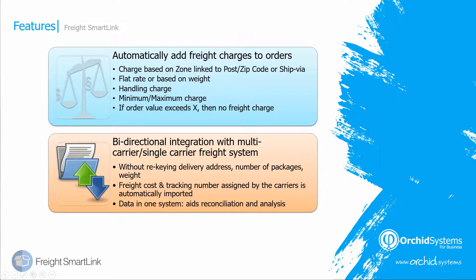The second feature of FreightSmartLink is the bi-directional integration with multi-carrier systems or a single carrier freight system. You can transfer data between the two systems without re-keying the delivery address, the number of packages, the weight, the freight cost, and tracking number or consignment note number assigned by the carriers. And you have all the data in one system, which aids reconciliation and analysis.